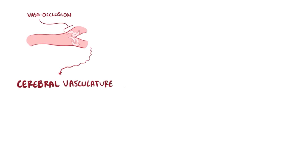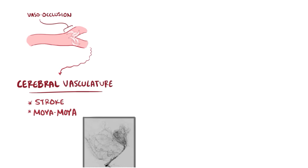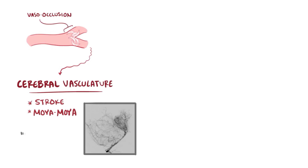Sickled red blood cells can get stuck in the cerebral vasculature, causing vessel damage resulting in strokes. Extensive sickle cell damage to the brain vessels may result in Moyamoya disease, named for the puff-of-smoke collateral vessels that bypass blocked arteries.